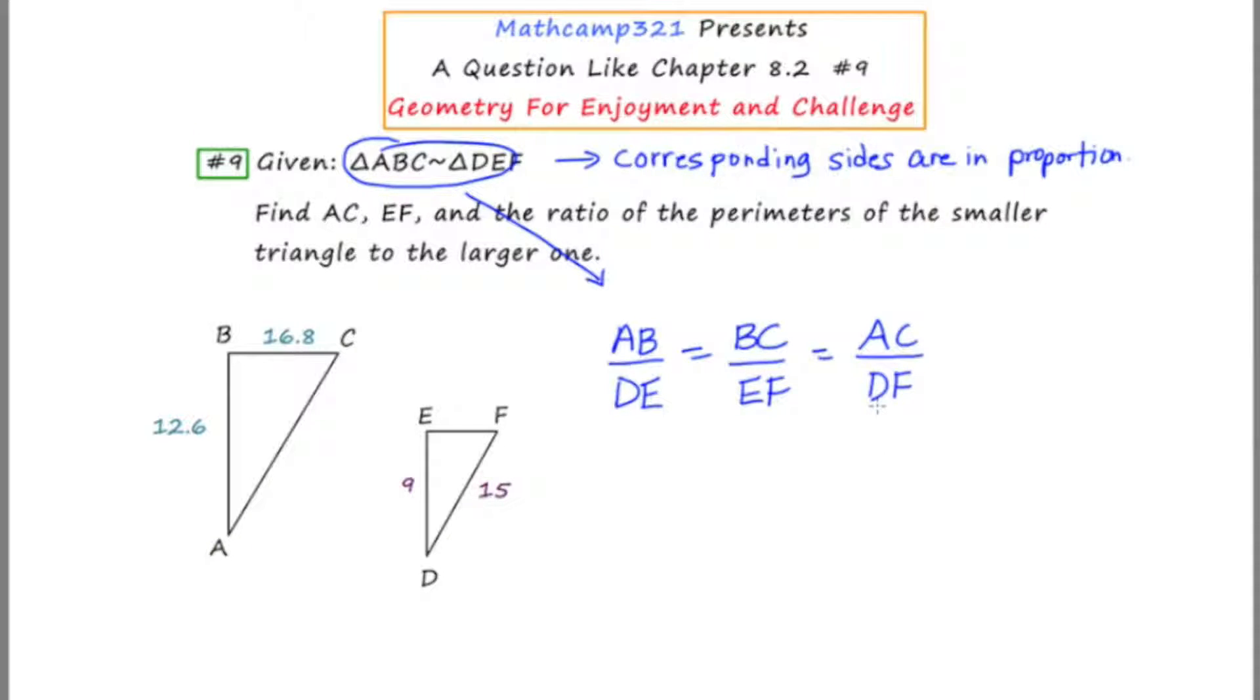Now that I've got this complex proportion set up, I'm going to substitute in the values from the diagram. So AB is 12.6, DE is 9, BC is 16.8, EF is unknown so I'm just going to leave that as EF. AC is unknown, so I'm going to leave that as AC. And DF is 15.